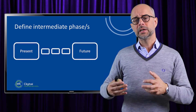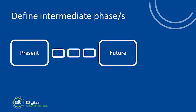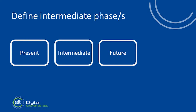Once we have done that, we define the intermediate phases. We divide the development from where we are today to the final scenario into a sequence of phases. For the examples given, it may usually be enough with one intermediate phase. That intermediate phase may be more of an experimental phase regarding the technology, or it may include the first market introduction of that technology. In the final phase we have the full utilization of the new technology.